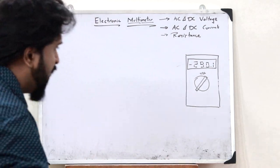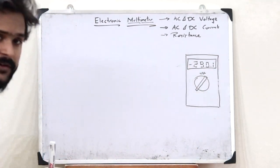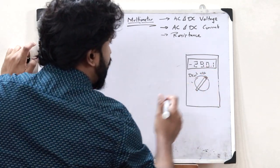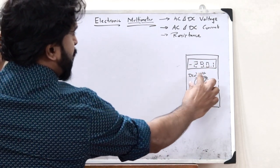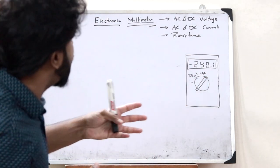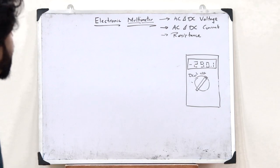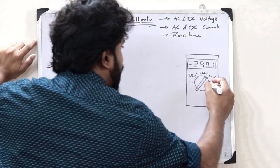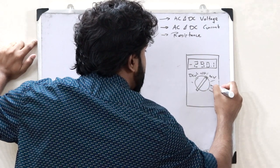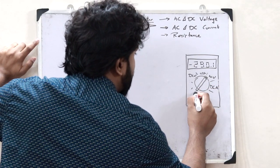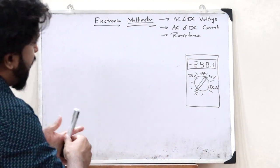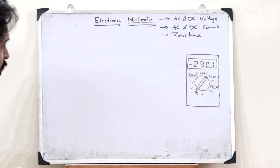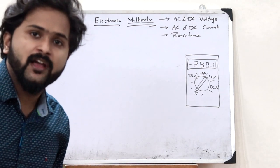The quantity to measure is selected by rotating the knob. For a particular range, we measure the DC voltage; if the knob is turned toward that position, we can measure DC voltage. For another range we measure AC voltage, for another range DC current, and for another range the resistance. By rotating this knob, we select what kind of quantity to measure with this electronic multimeter.